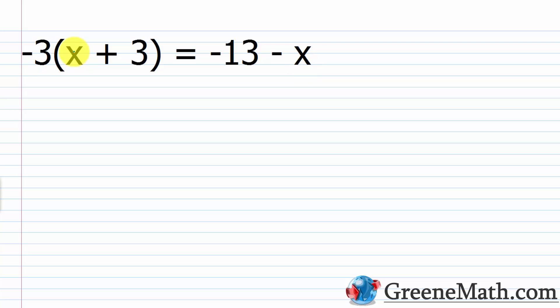We would simplify each side first. So -3 multiplied by x would be -3x. The -3 multiplied by 3 would be -9. This would be equal to -13 - x. Let's move all the variable terms to one side and all the numbers to the other. So I'm going to add x to each side of the equation and I'm going to add 9 to each side of the equation.